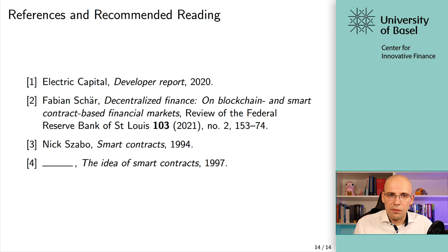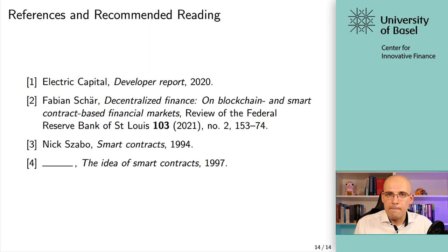Some references for the class: there is a paper you should read, particularly when we start talking about decentralized finance. It's also always a good idea to revisit the Nick Szabo papers to get a general idea of smart contracts — not necessarily in a blockchain context, but just to realize where this all started and where the initial idea for smart contracts actually came from. And that's it for the introductory part of this class. Stay curious, see you soon.